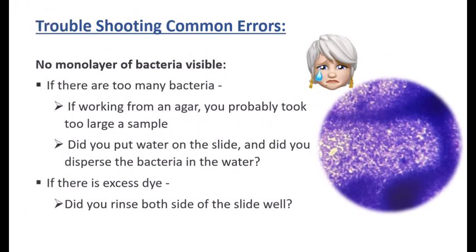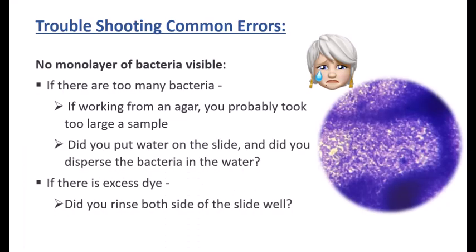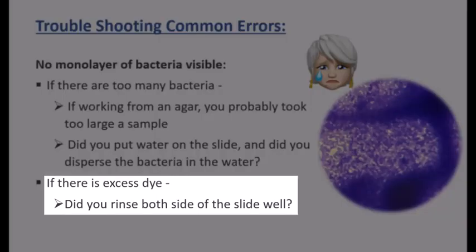If you look under that microscope and you can't see a monolayer of bacteria, so you can't see individual cell shapes, there's too many bacteria on the slide. If you were working from an agar, you probably took too large of a sample. Or perhaps you forgot to put the water on the slide or just didn't disperse the bacteria in the water very well. The other thing that could have happened was too much dye left on the slide, meaning that you didn't rinse both sides of the slide very well.